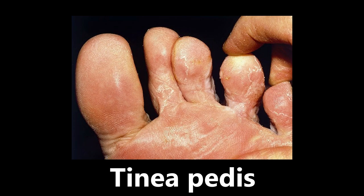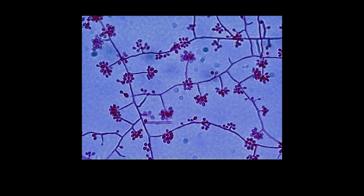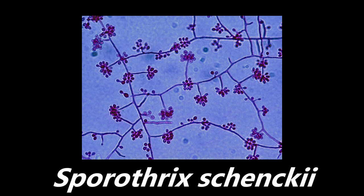This is going to be the last image — of course, we have to end with more microbiology and organism identification. This is an example of Sporothrix schenckii in the hyphal form. Basically, it's colonies of conidia connected by filaments — it kind of looks like little berries on a branch or flowers. That's convenient because this is the causative organism for sporotrichosis, also known as rose gardener's disease or rose handler's disease. It kind of looks like flowers or little roses on branches, so be able to identify this and know the causative organism.